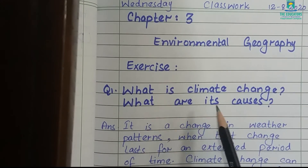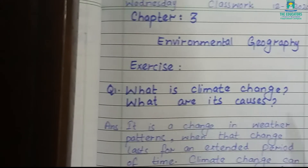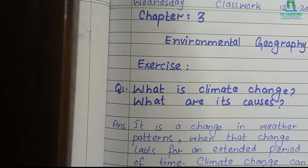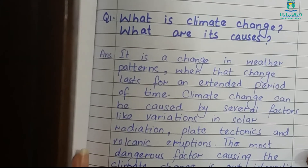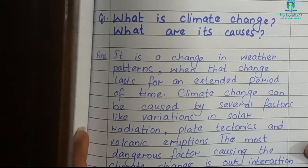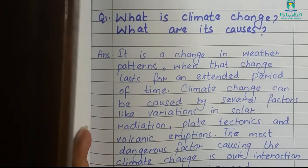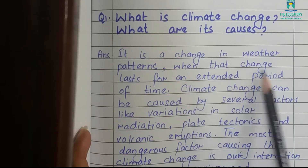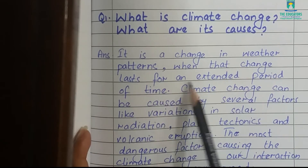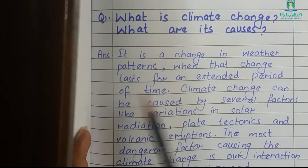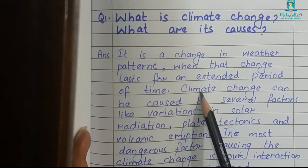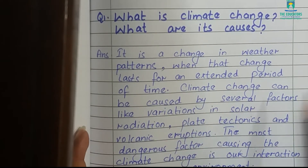The answer is: climatic change is a change in weather patterns. As I told you, climatic change is a change on a seasonal basis — it is not on a daily basis. When that change lasts for an extended, meaning longer, period of time, this is called climatic change.